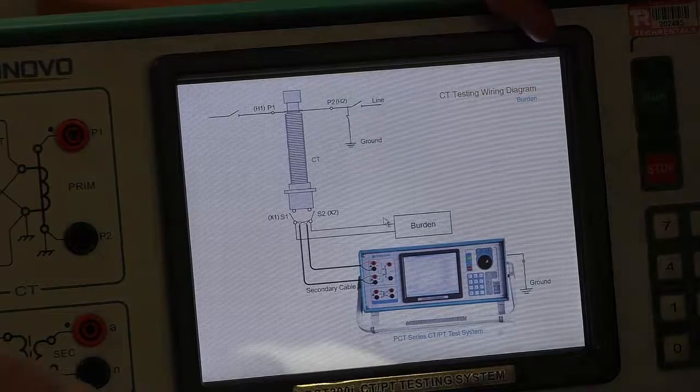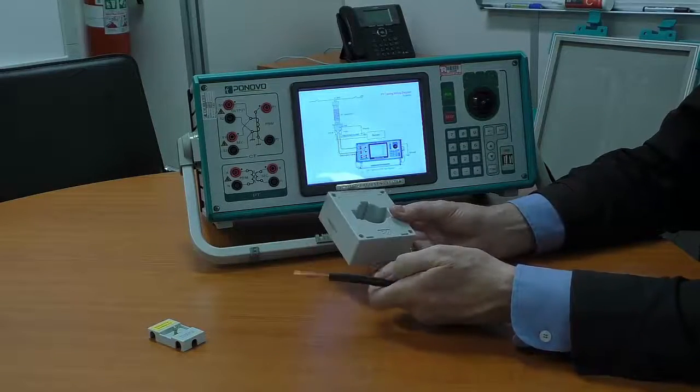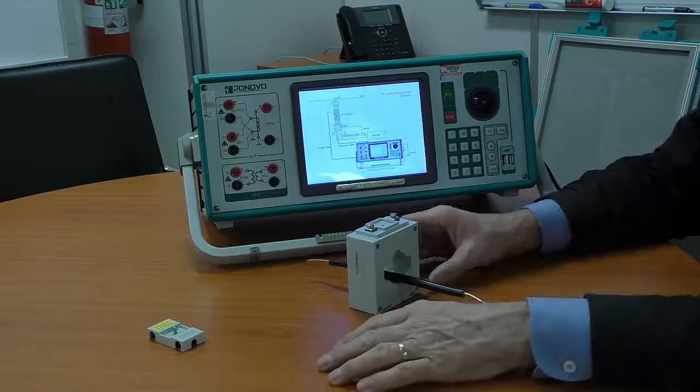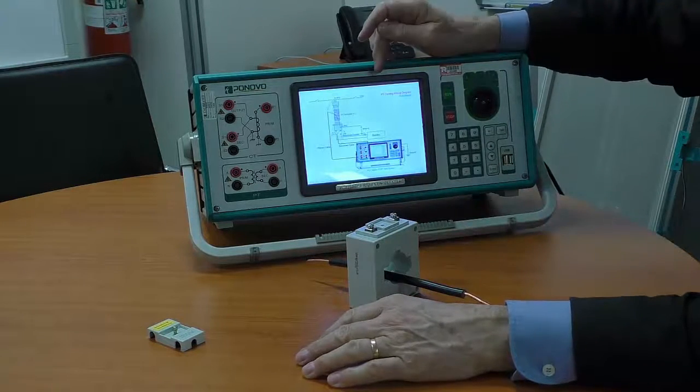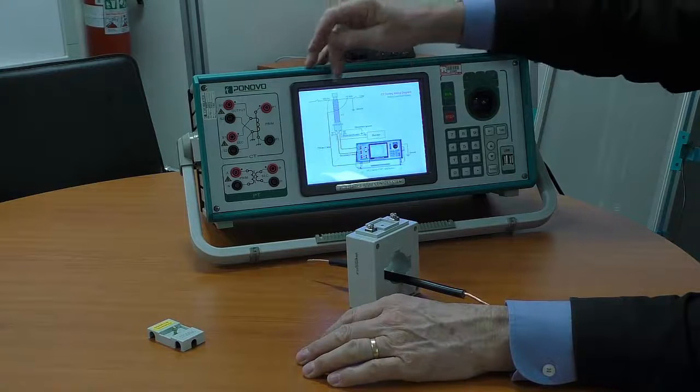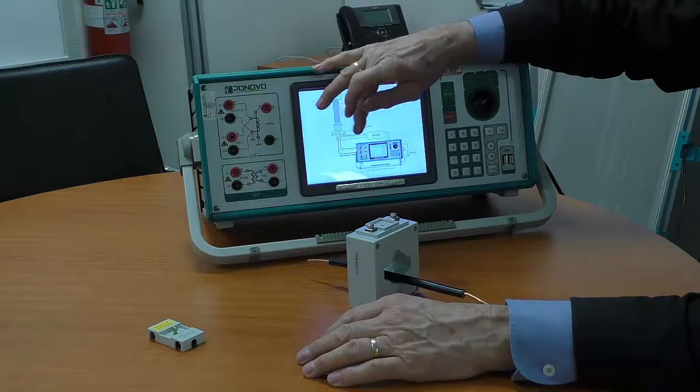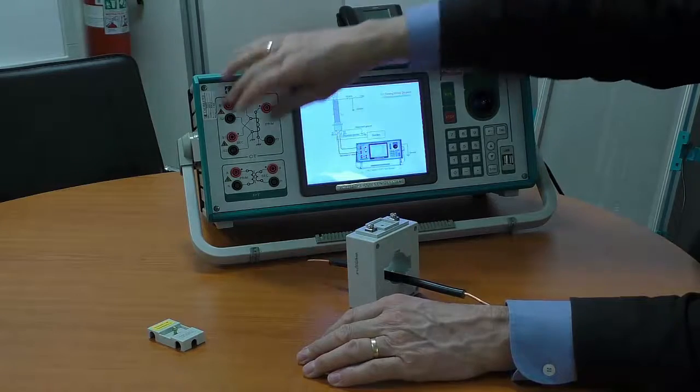In this case, we're going to test this particular current transformer, here's the wire going through it. Now, this gives us the wiring diagram and it's swapping between the two. So here's the wire going through it, I need to connect one side to earth, four other wires over here.